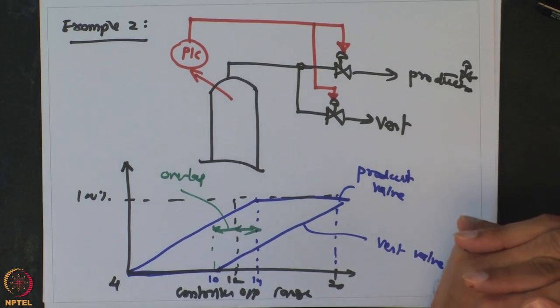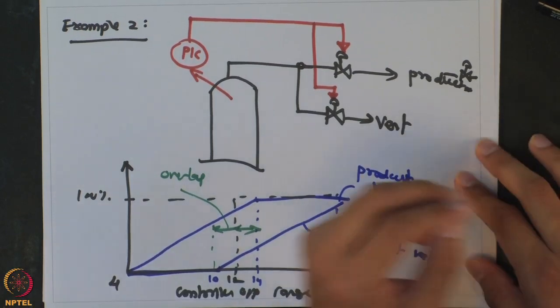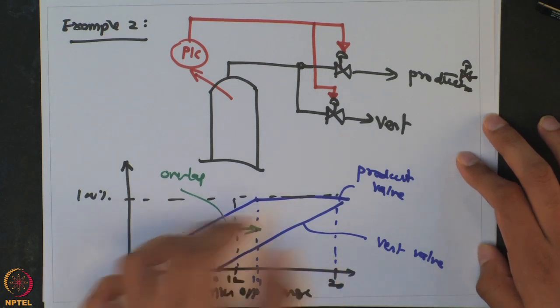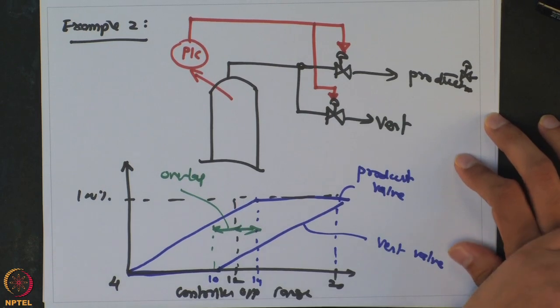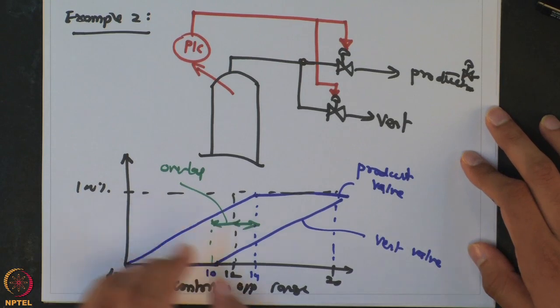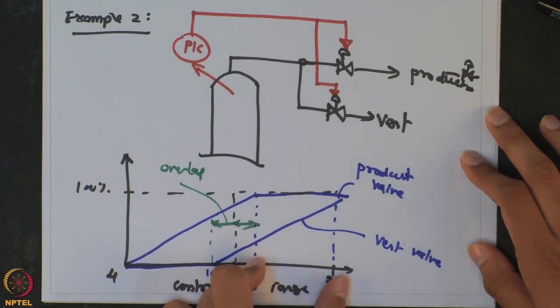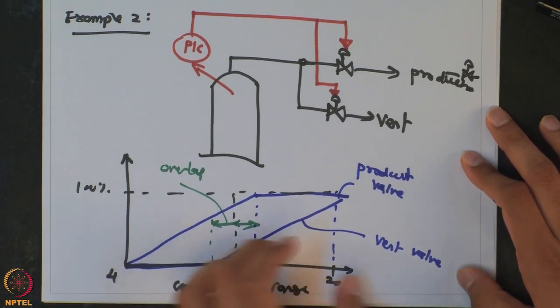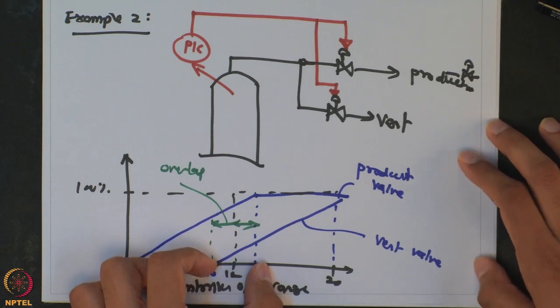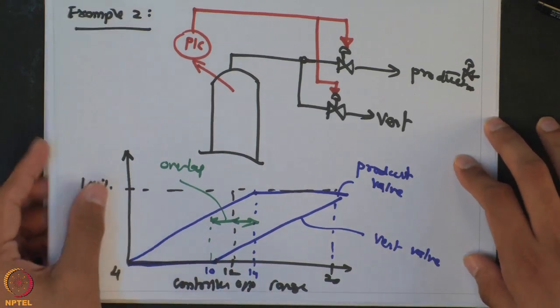There are also cases where you want a dead band — a range over which no control action is taken. This is done when the two actions are mutually exclusive. A commonly used example is a batch reactor that uses the same jacket for both heating and cooling: one range uses hot fluid or steam to increase temperature, and the other range uses cooling water. You do not want to mix steam with cooling water, so as a protection you include a dead band where no control valve is operational.